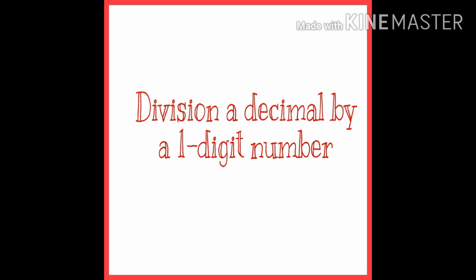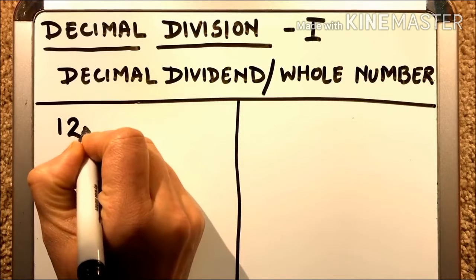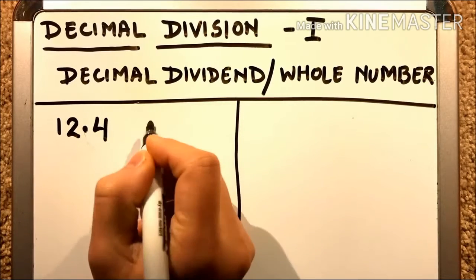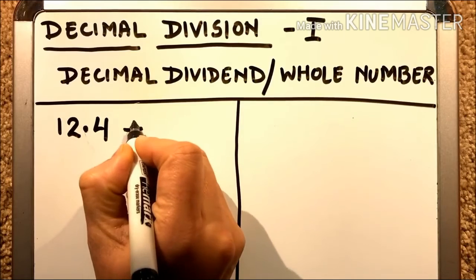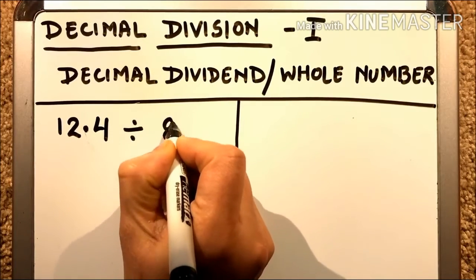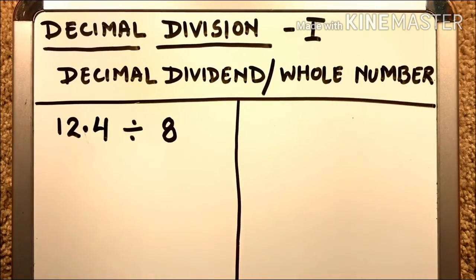Now the next topic is division of a decimal by a one-digit number. Let's understand with the help of an example. The example is 12.4 divided by 8. Decimal division is started as normal division, but we need to take care of the decimal part.